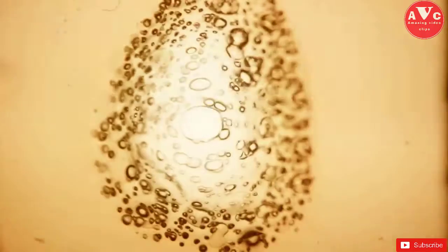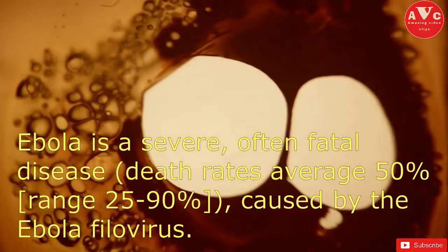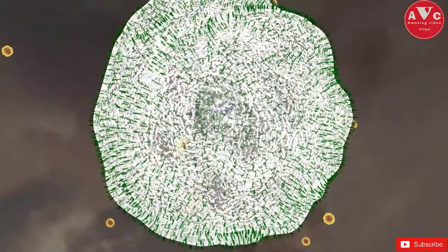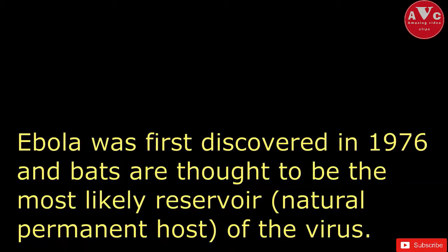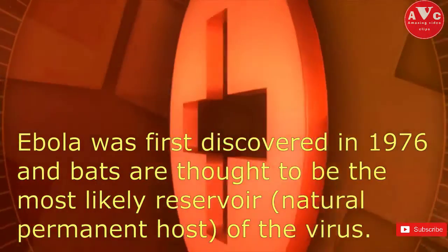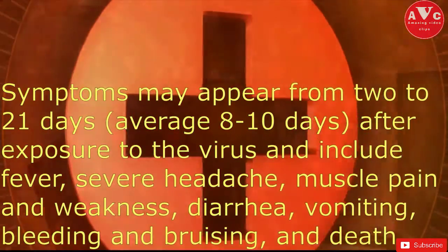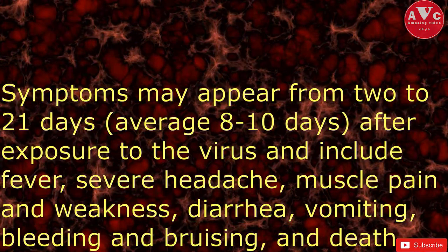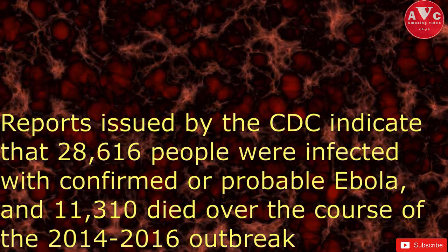Ebola: Ebola is a severe, often fatal disease. Death rates average 50%, ranging from 25 to 90%, caused by the Ebola filovirus. There are five different types of Ebola virus, four of which are known to cause disease in humans. Ebola was first discovered in 1976, and bats are thought to be the most likely natural reservoir host of the virus. The virus readily spreads to humans and from human to human through direct contact via broken skin or mucous membranes with an infected person or animal, living or dead, or with contaminated needles and syringes.